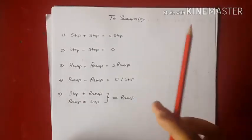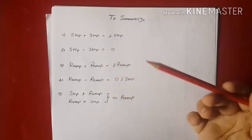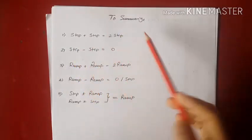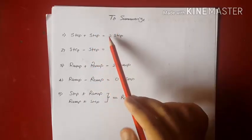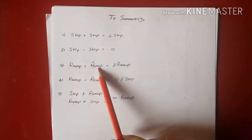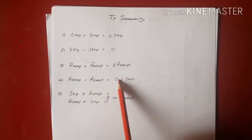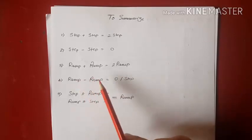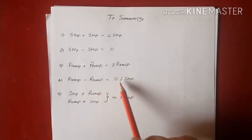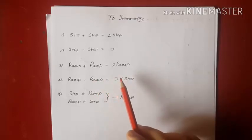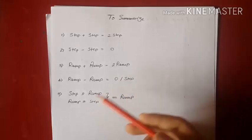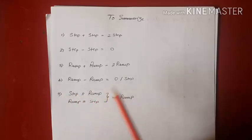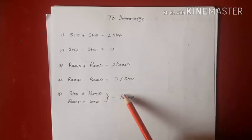To summarize all the tricks seen in this tutorial: Trick 1 — step plus step gives 2 step. Trick 2 — step minus step gives 0. These two tricks relate to step functions, and what matters is the amplitude. Trick 3 — ramp plus ramp gives 2 ramp. Trick 4 — ramp minus ramp gives 0 or a step; this is subjective to the slope of the ramp signal and the point in the time direction from which the ramp is started. Trick 5 — step plus or minus ramp, or ramp plus or minus step — addition or subtraction between ramp and step signals will always result in a ramp signal.